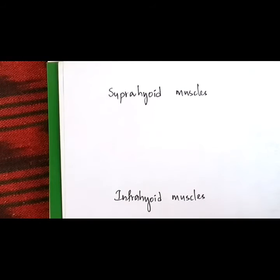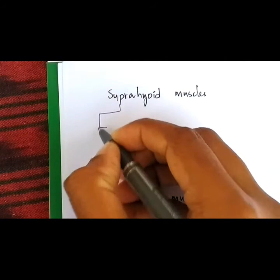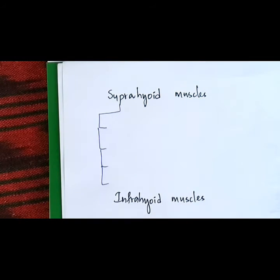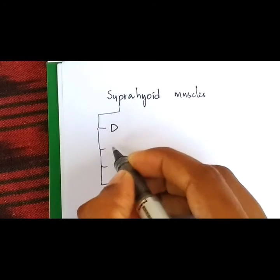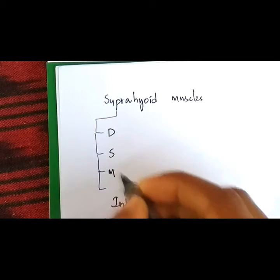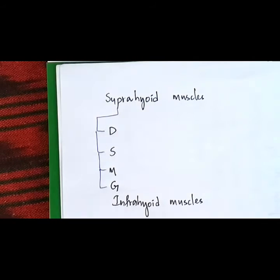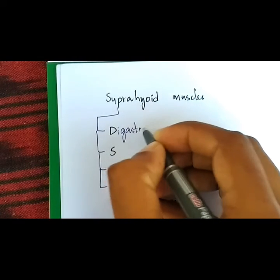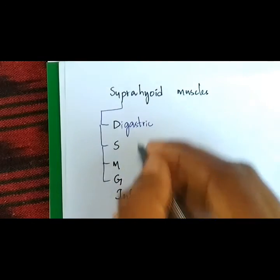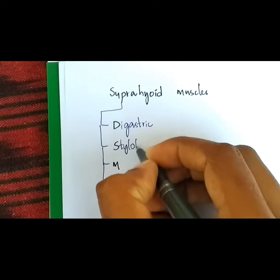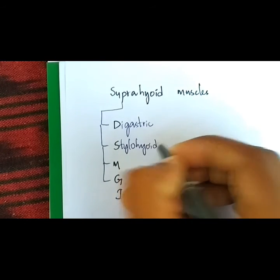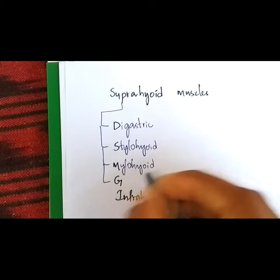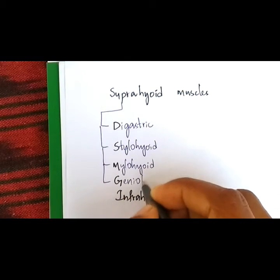There are four suprahyoid muscles. The mnemonic is B, S, M and G. The muscles are digastric, stylohyoid, mylohyoid and geniohyoid.